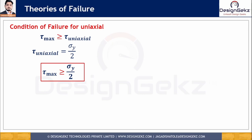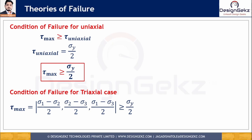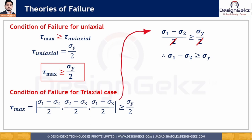For the triaxial loading case, the failure condition is: the maximum of (σ1 − σ2)/2, (σ2 − σ3)/2, and (σ1 − σ3)/2 must be greater than or equal to σ_y / 2. Cancelling the 2 from both sides, the failure conditions become: σ1 − σ2 ≥ σ_y, σ2 − σ3 ≥ σ_y, and σ1 − σ3 ≥ σ_y.